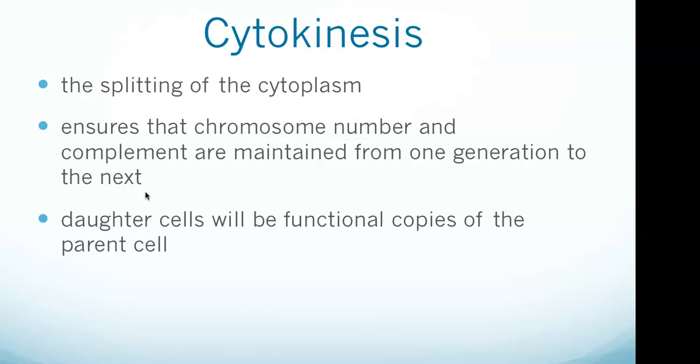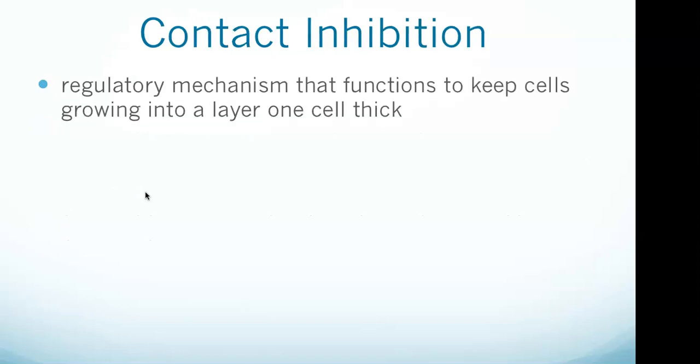In animal cells, cytokinesis occurs via a cleavage furrow, which can only be used to divide animal cells. Contact inhibition is a regulatory mechanism that keeps cells growing into a layer one cell thick — a monolayer. If a cell has plenty of available substrate space, it replicates rapidly and moves freely. This continues until cells occupy the entire substratum, at which point normal cells stop replicating.